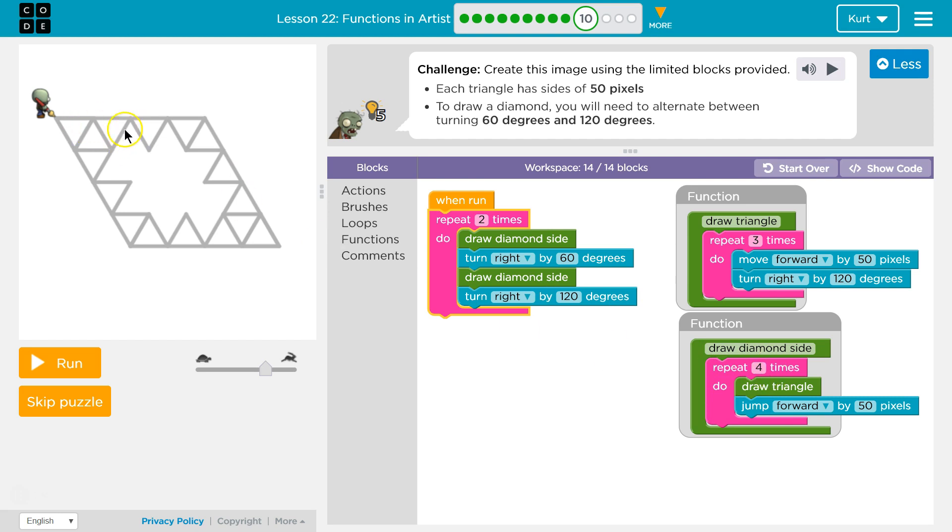Hit the bottom of this. Do it again. Draw another triangle. Four times, which draws the whole side of the diamond. Once I'm done with that, I hit the bottom of this. I turn 60 degrees, like here. And then draw this side again. Run all that again.